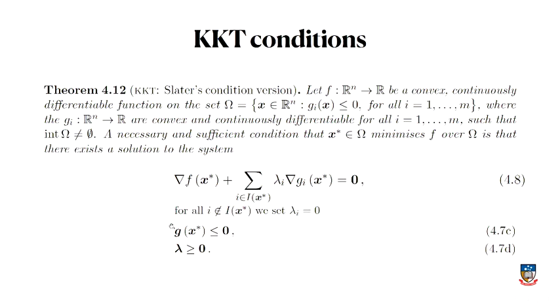We've talked a lot about cases where we have inequality constraints, where my function is defined on some set where these constraints are less than or equal to zero. My g_i's are less than or equal to zero, and so the optimal solution can be on the boundary or it can be in the interior of this set.